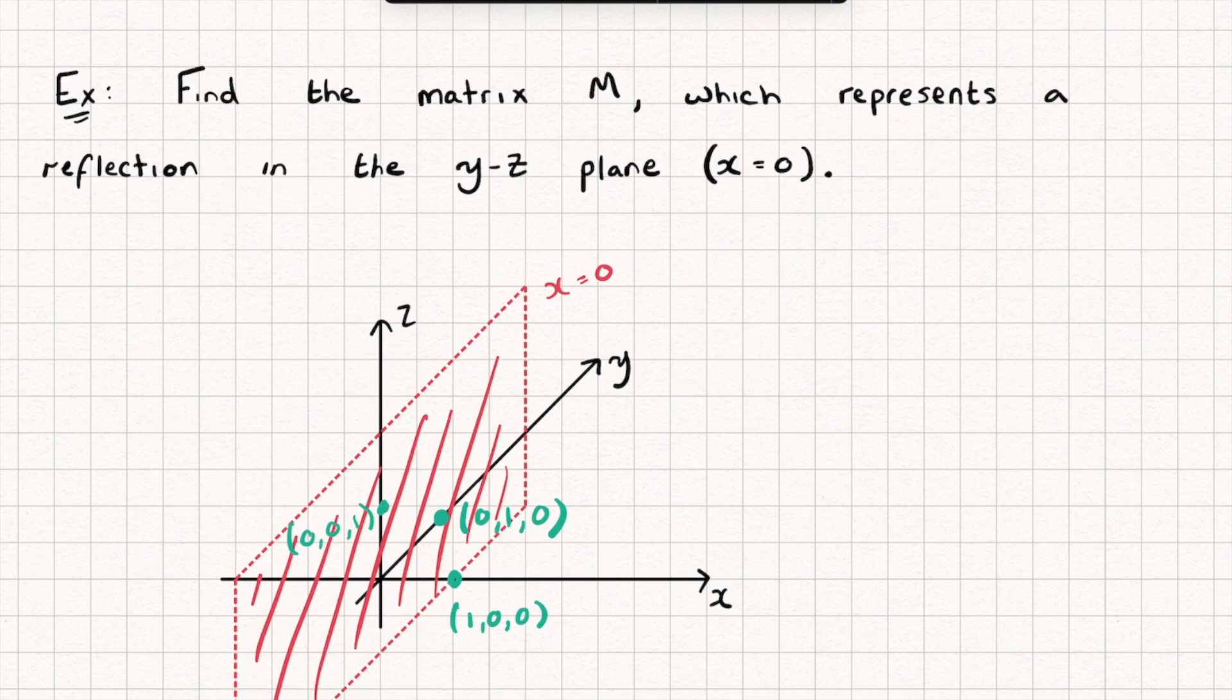Well the point (1,0,0) is actually going to be reflected in this and it's going to end up over here with (-1,0,0). Hopefully you can see it's reflected in that to become (-1,0,0). The point (0,1,0), well that's on the plane so that's invariant. And same for the point (0,0,1), that's also going to remain fixed.